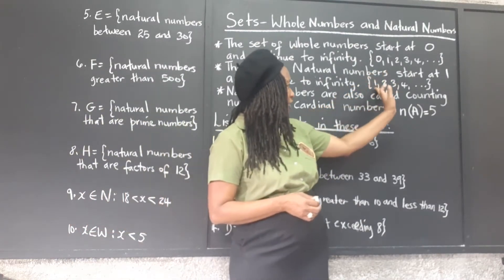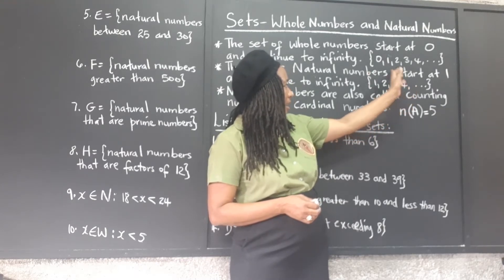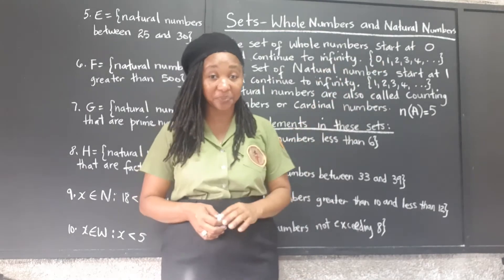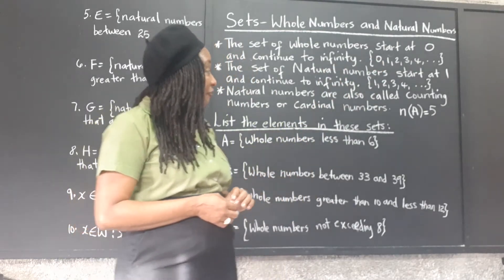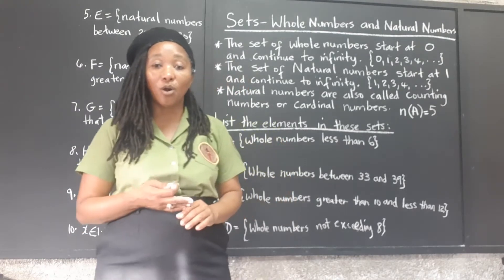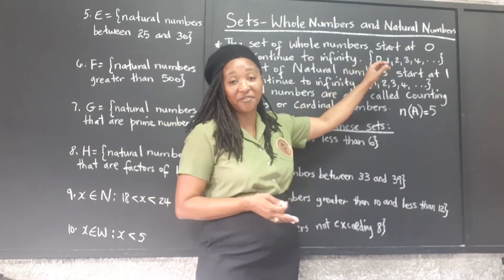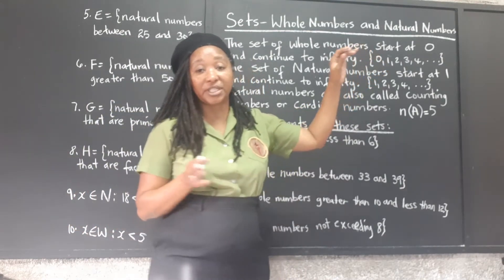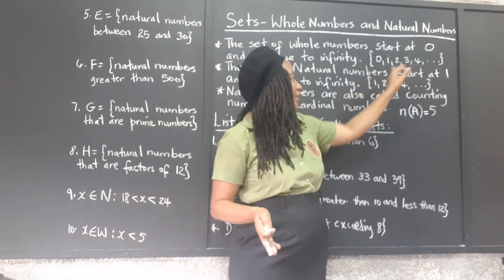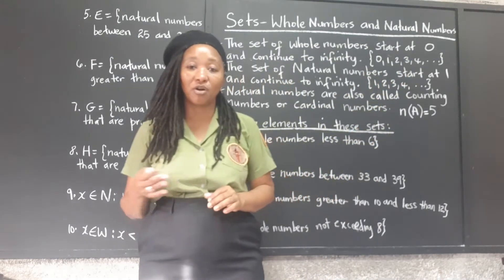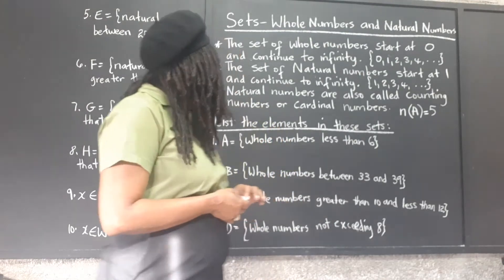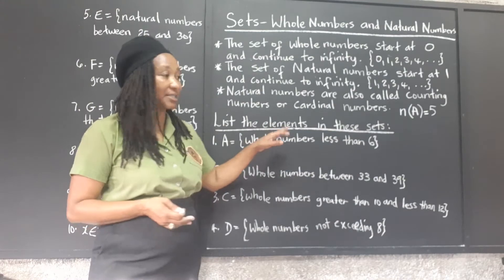You may notice that the natural numbers are all whole numbers except for zero. That is the only difference between the set of natural or counting numbers and the set of whole numbers — zero makes the difference. Zero is a whole number but it is not a natural number. All the other whole numbers are also natural or counting numbers.